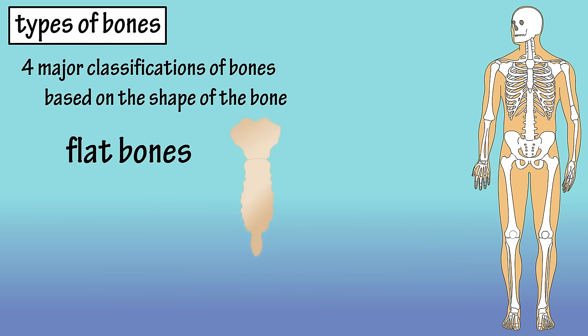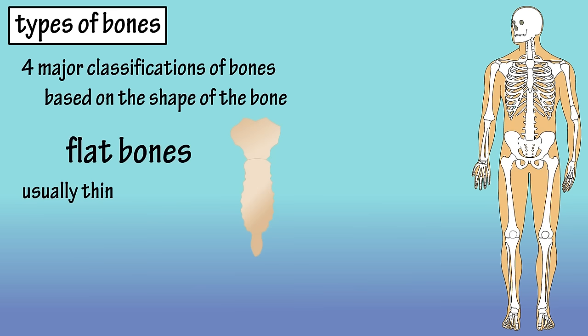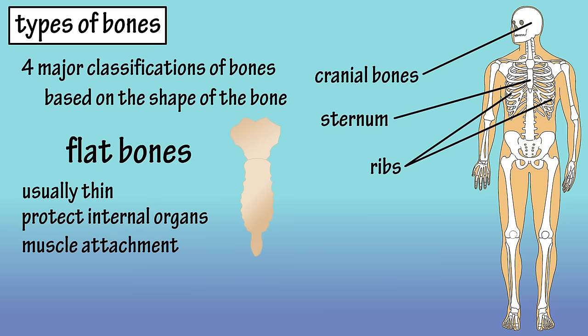Flat bones are usually thin and sometimes have a curved shape to them. Flat bones protect internal organs such as the brain and heart, and many of them have broad surfaces for the attachment of muscles. Some examples of flat bones are the cranial bones in the skull, the sternum, and the ribs.